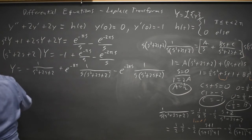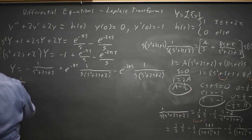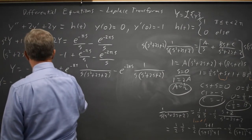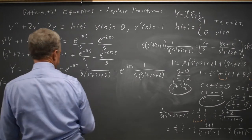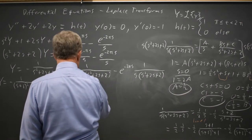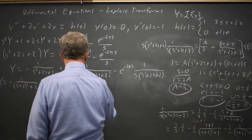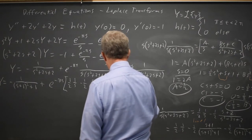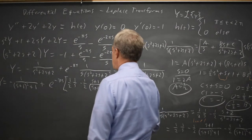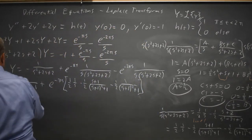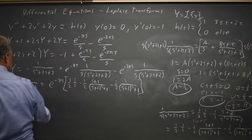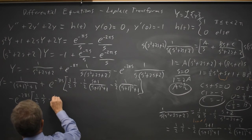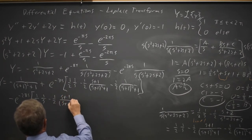So uppercase Y, the transform of my solution, is negative 1 over ((s plus 1) squared plus 1) when I complete the square on that denominator. And then plus e to the negative pi s times [(1/2)(1/s) minus (1/2)(s plus 1) over ((s plus 1) squared plus 1) minus (1/2)(1 over (s plus 1) squared plus 1)]. And then minus e to the negative 2pi s times the same expression.